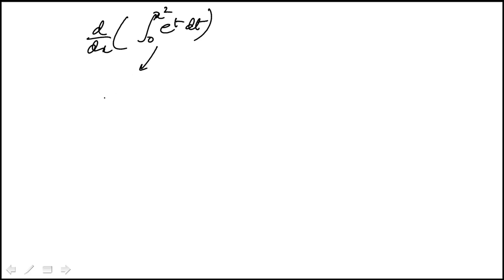Integral of e to the power of t is just e to the t plus the constant. The endpoints are 0 and x squared, so I'm going to replace those.